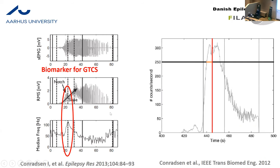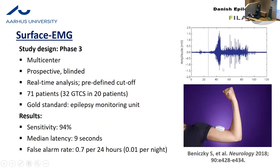We have a threshold for the amplitude and then we go for the high frequencies. A very cheap and efficient way to monitor frequency in real time on a wearable device is to count how often the signal crosses the baseline — the zero cross count. We just need a threshold for the number of zero counts and also for the duration where this must be beyond the threshold. We trained this in a dataset and then conducted a so-called phase three validation study on this wearable device.